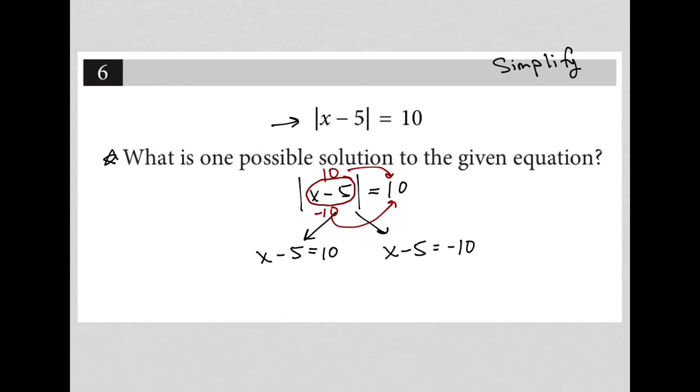To solve each equation separately, I'd add 5 to both sides here and I have x equals 15. That's one possibility and add 5 to both sides here and I have x is equal to negative 5. So those are our two solutions.